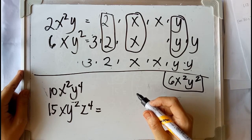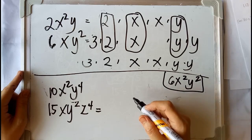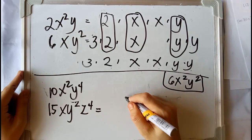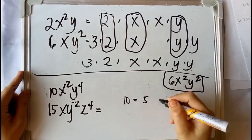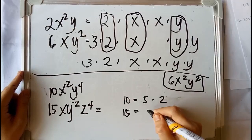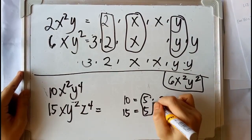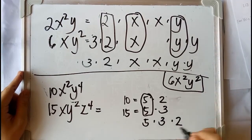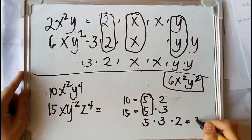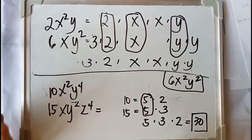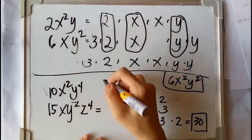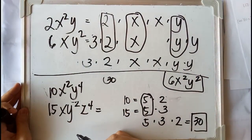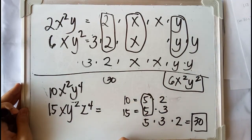To make your solution simpler, just find the LCM of the numerical coefficient and copy the variables with the highest exponent, then multiply the result. For example, we have 10 and 15. By prime factorization, 10 is equal to 5 times 2, and 15 is equal to 5 times 3. Here we have a common factor of 5. Copy the remaining factors and multiply: 5 times 3 times 2 is equal to 30. So the LCM of the numerical coefficient is 30.